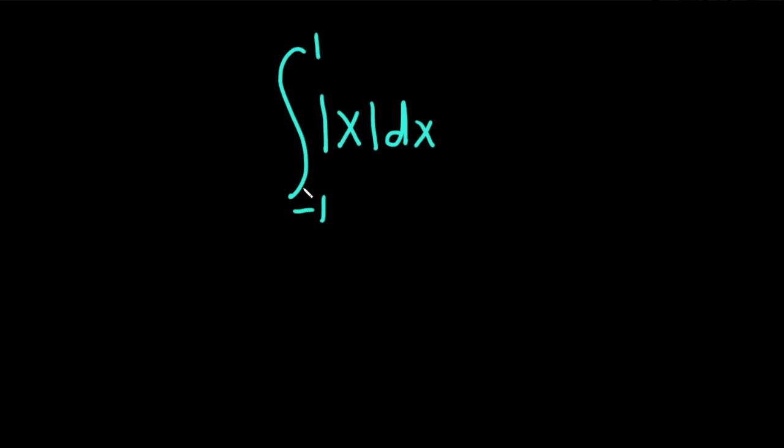This looks pretty fun. We have the definite integral from negative 1 to 1 of the absolute value of x. So let's work through this. Let's actually do it two ways. Let's do it using the piecewise function definition for the absolute value of x, and then we'll do it graphically using some basic geometry, and we'll compare our answers. That might be kind of fun to experiment.